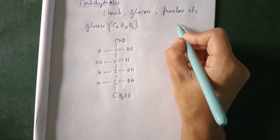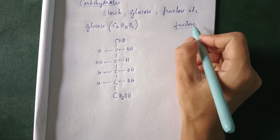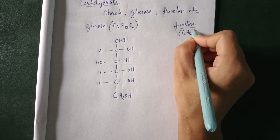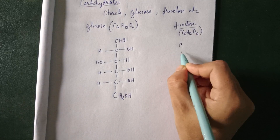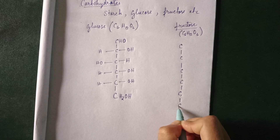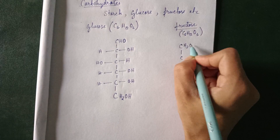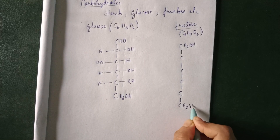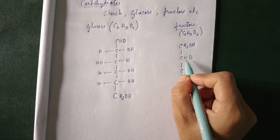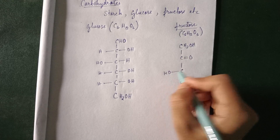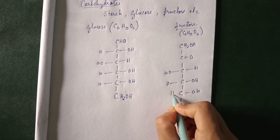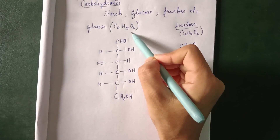Now let us also draw fructose. The formula is also the same: C6H12O6. How many carbons? One, two, three, four, five, six. We will make the first carbon as CH2OH and the last carbon as CH2OH. The second carbon we make as a ketone — C double bond O. Then the OH groups go: left, right, left, right, right. Done.